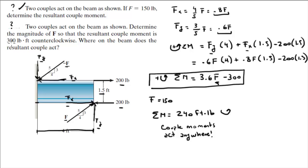we're given that the couple moment is 300 foot-pounds counterclockwise. So we replace the moment by 300. It's equal to 3.6f minus 300. You solve for f, and you get that f is equal to 166.67 pounds.